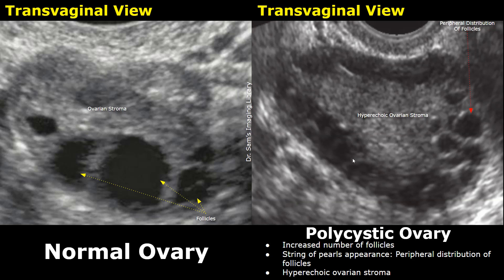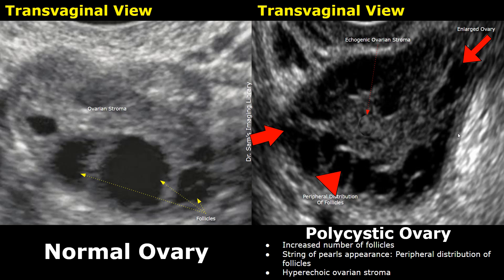Another feature you will find is that the central ovarian stroma will appear hyperechoic. The central stroma will appear more prominent because it is surrounded by anechoic or hypoechoic follicles. In this image, you can see the echogenic central stroma surrounded by hypoechoic follicles. The ovary was also enlarged. You can clearly see a difference in appearance between a normal ovary and a polycystic ovary on ultrasound.